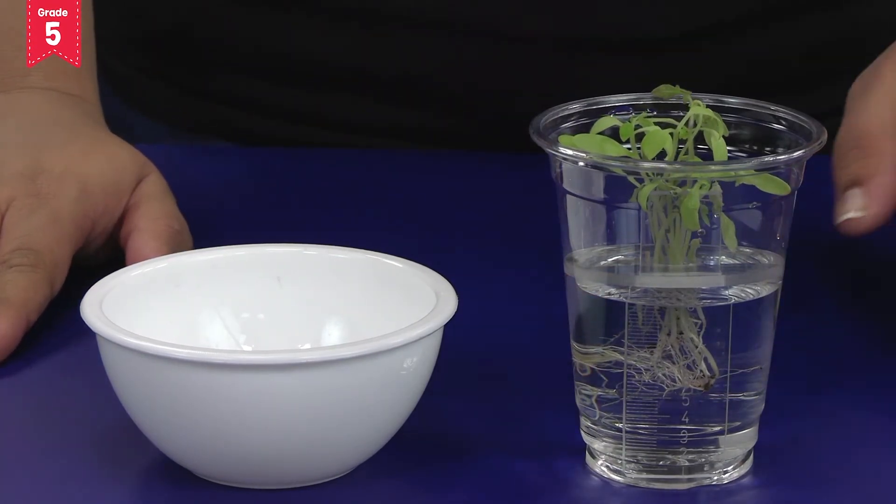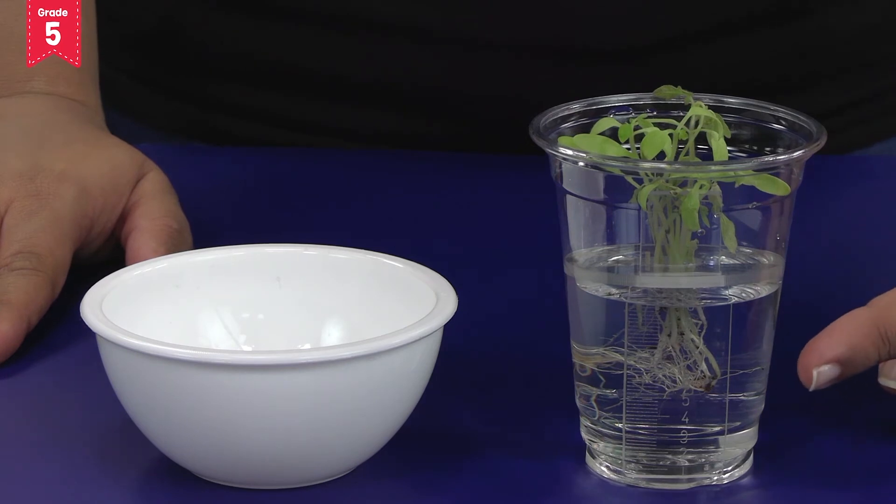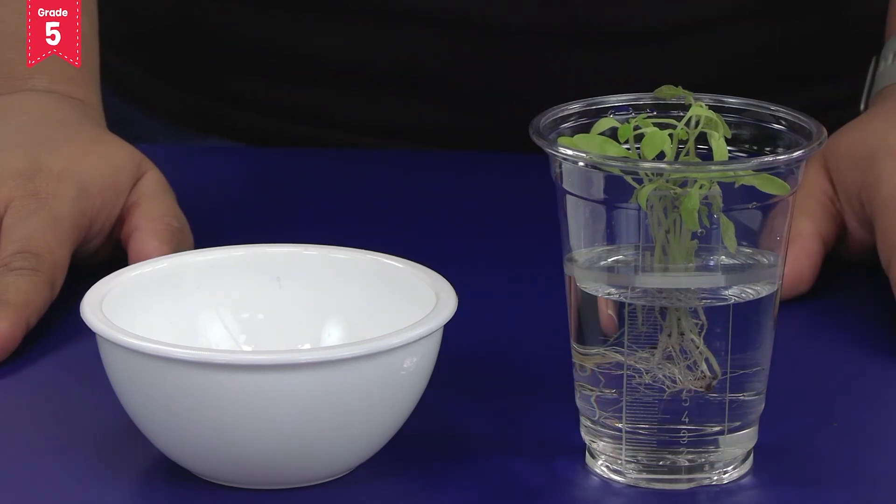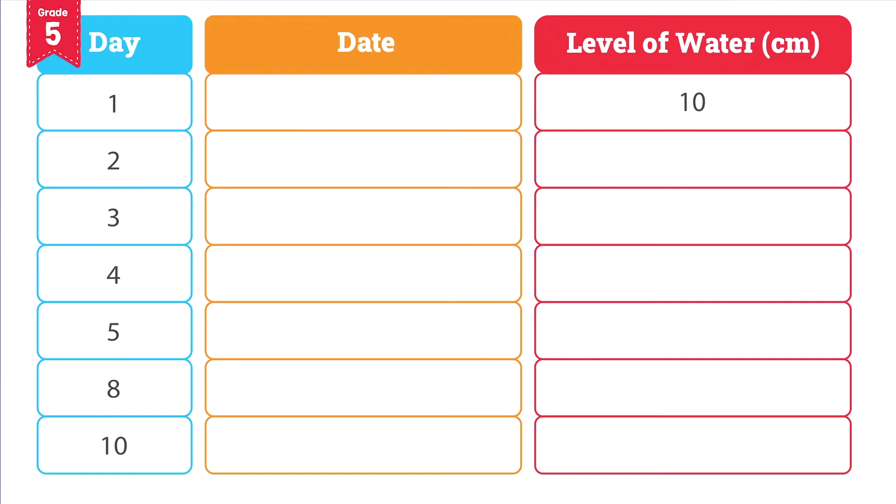Make sure that the roots are immersed in water. Observe the level of water on the scale and note it in the observation table of your types and parts of plants concept manual. Note down the date too.